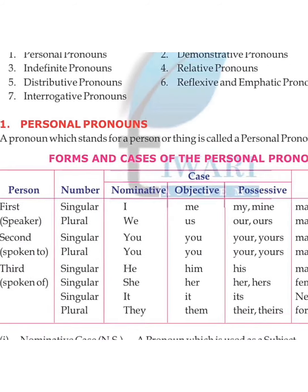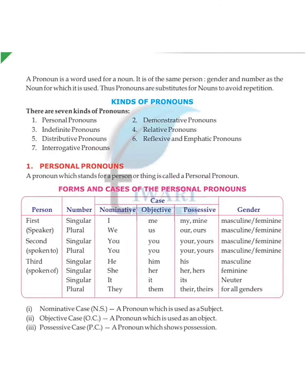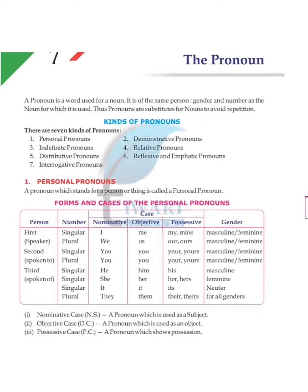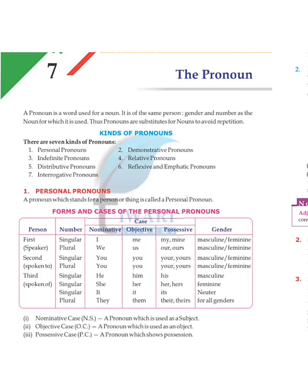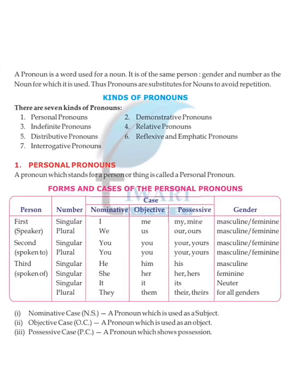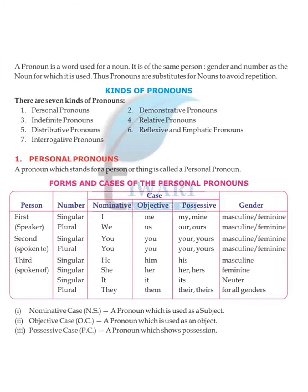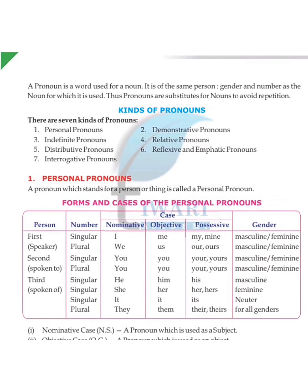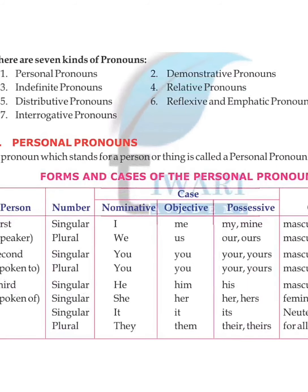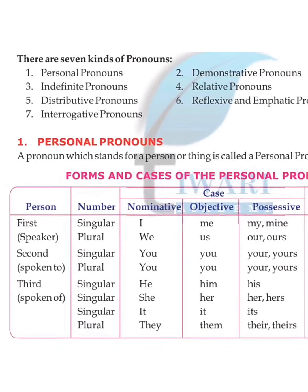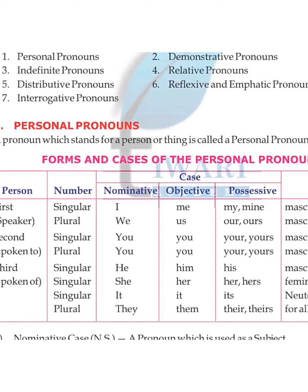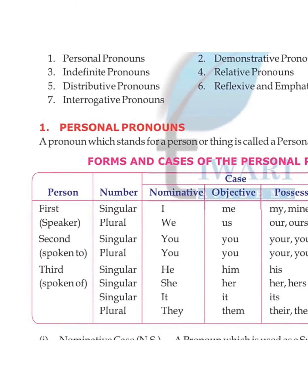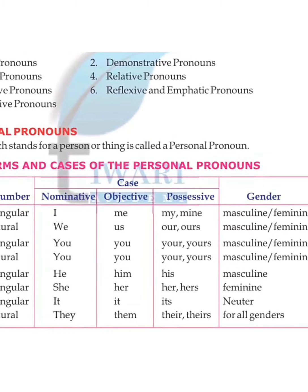Let's explain personal pronouns. A personal pronoun is a pronoun which stands for a person or thing. A pronoun which stands for a person or thing is called a personal pronoun. Let's look at the forms and cases of the personal pronoun.